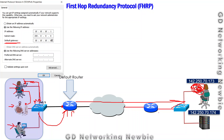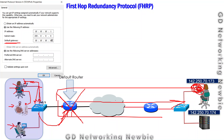There is a problem: if this default router fails for any reason, it becomes a single point of failure. After the failure, we will be disconnected from the rest of the network. This router is basically the first hop — from our users, this is the first hop.